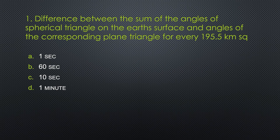First question. The difference between the sum of the angles of a spherical triangle on the earth's surface and the angles of the corresponding plane triangle for every 195.5 km² is? Option A: 1 second. Option B: 60 seconds. Option C: 10 seconds. Option D: 1 minute.